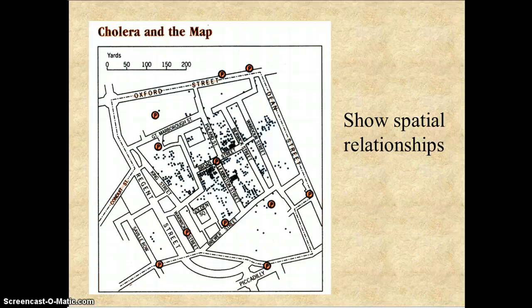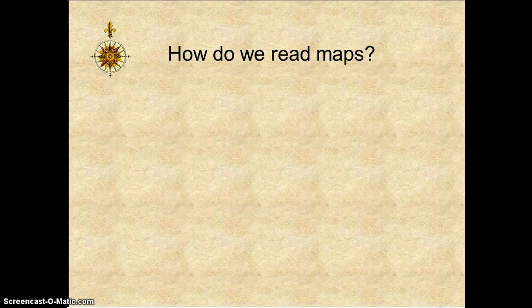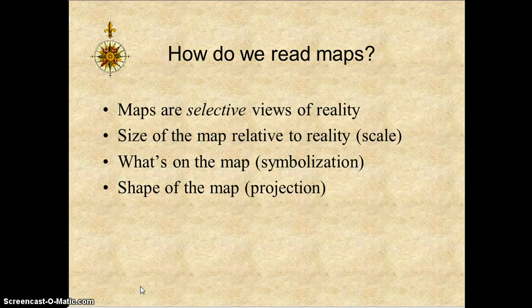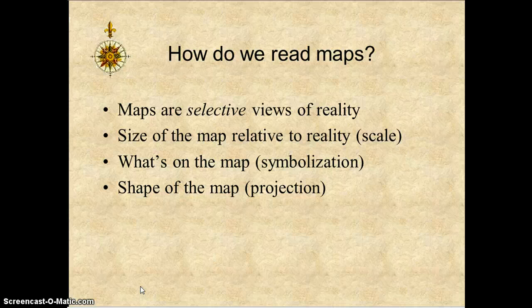It can also show spatial relationships — this map is showing color and where it can be found. How do we read maps? Maps are selective views of reality. The size of the map is relative to its reality, or scale. What is on the map includes symbolization, and the shape of the map is called projection. Take a moment and we'll jot these things down.